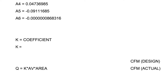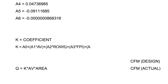K equals A0 plus A1 multiplied by average coil velocity, plus A2 multiplied by the number of tube rows deep in the coil, plus A3 multiplied by fins per inch, plus A4 multiplied by tube spacing of the coil, plus A5 multiplied by the tube outside diameter, plus A6 multiplied by average coil velocity squared.